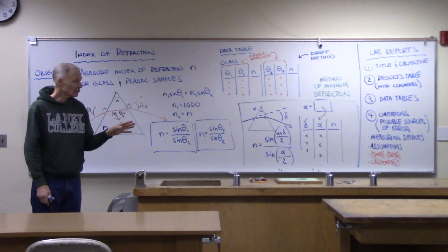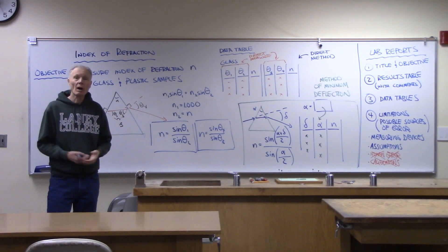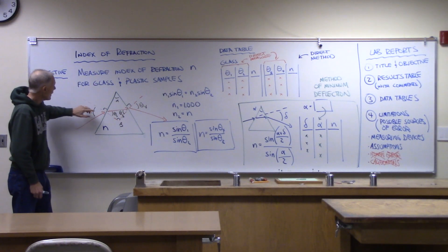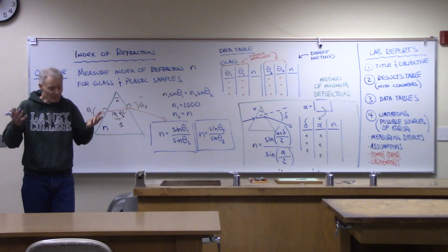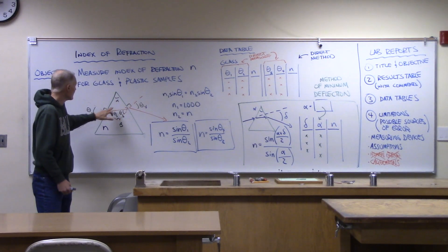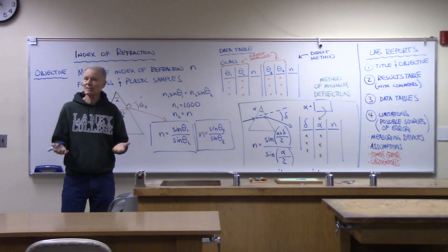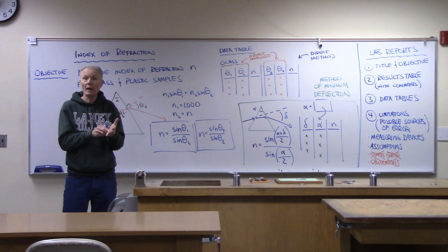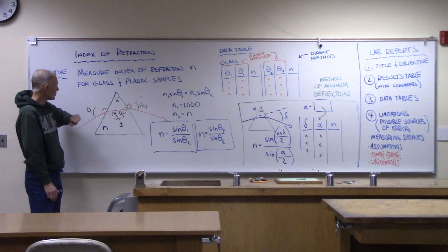In our lab today, we're going to be following paths of light through these materials, and we need to be able to identify where theta one is on our diagram. We're going to measure theta one, and then the light coming into the glass and passing through the glass is not going to be at the same angle — because of this slowdown effect, it's going to be slower. What we find is that there's a bend toward the normal. The more light slows down, the more its path will bend toward that normal line. So this is going to be theta two.